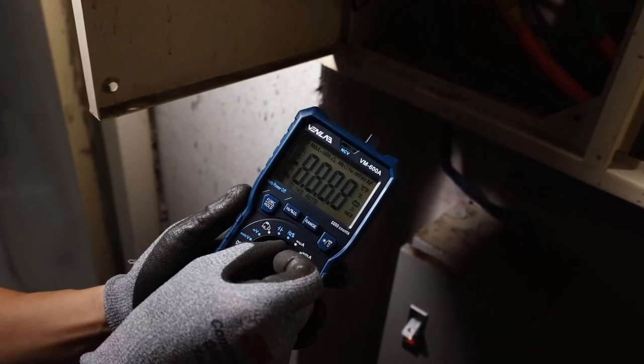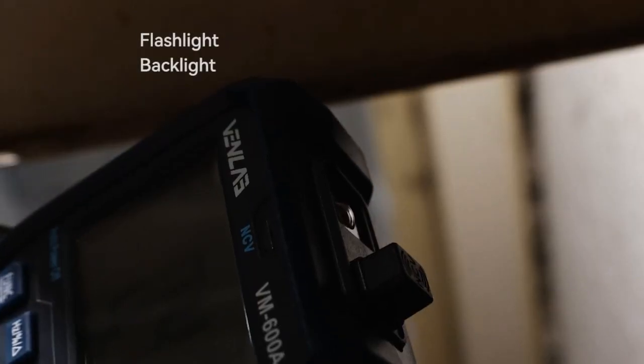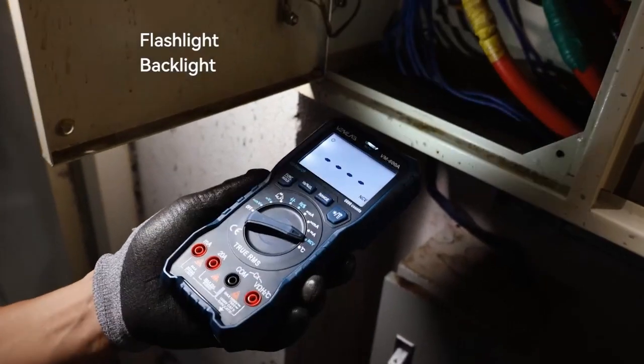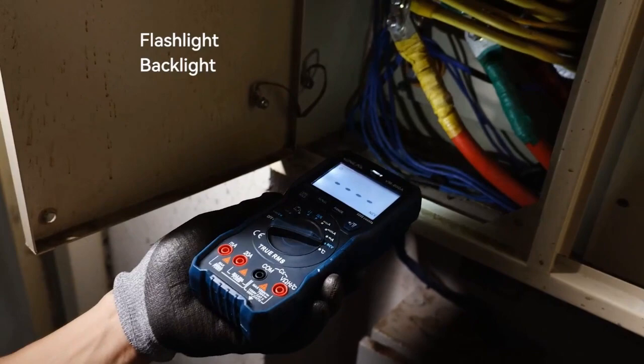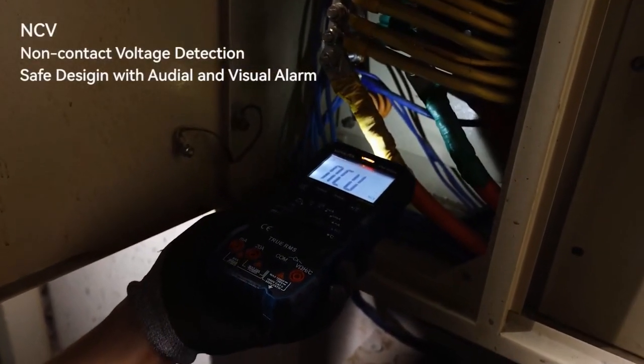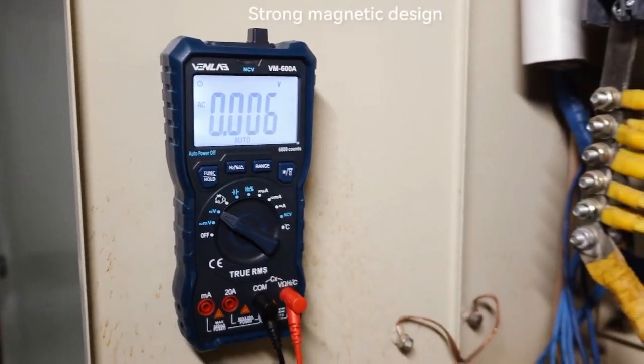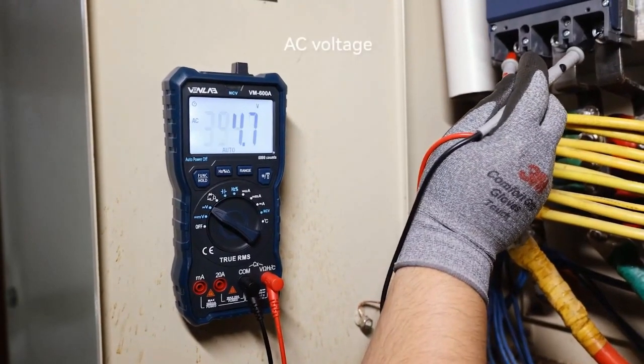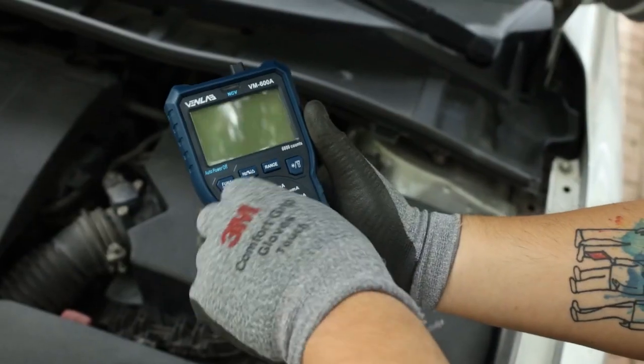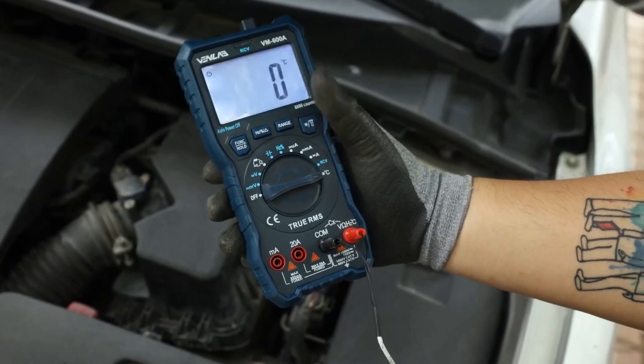And the multimeter in question was this Venlab VM600A. Now it just so happens that Venlab actually reached out to me a couple of weeks ago and sent me an email saying would you like to do a multimeter review? Well, I'm never going to turn down free stuff. So I said yes, I would be delighted to take a look.